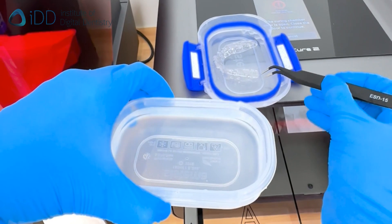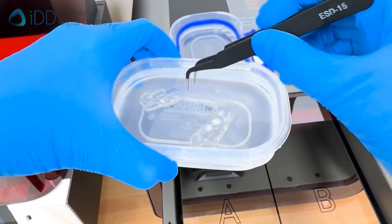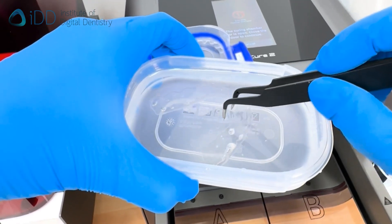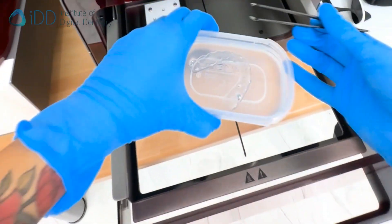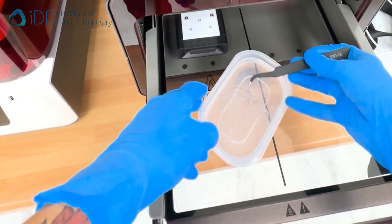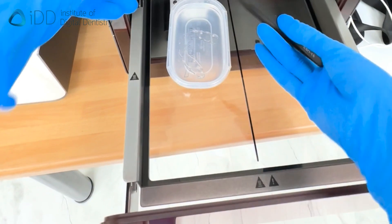Halfway through the cycle, I stop the machine, remove the splint and put it inside a container with glycerin. This is to combat the oxygen inhibition layer. Oxygen in the air interferes with the polymerization of the very topmost layer of resin, so placing it in glycerin prevents this from happening.